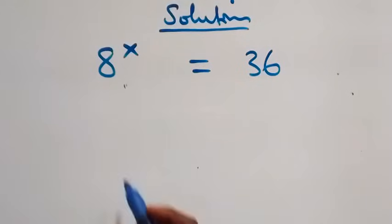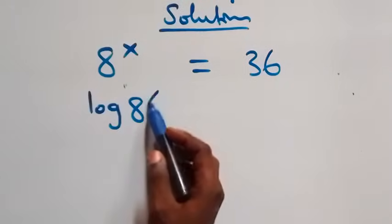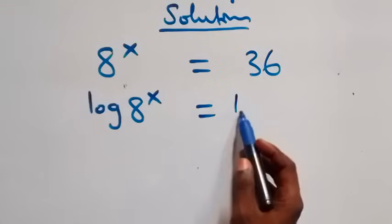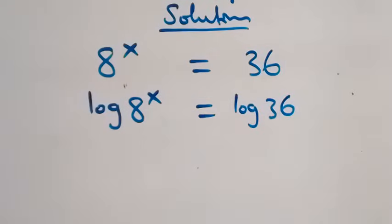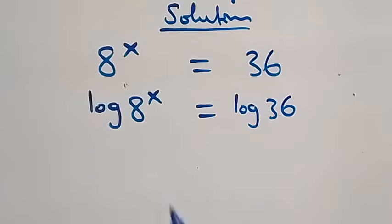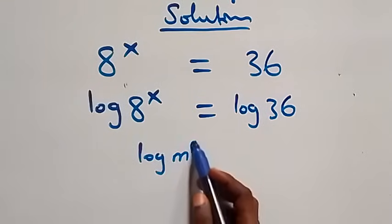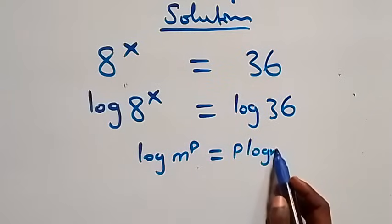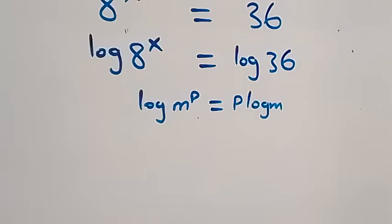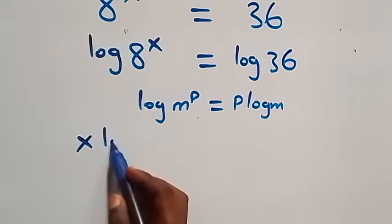We take the log on both sides. We have log of a raised to power x equals log 36. From here we apply the power law of logarithm: log m raised to power p is the same as p log m. That gives us x log 8.